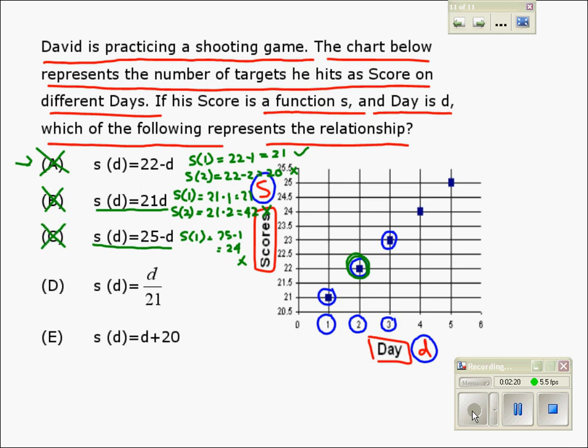Option D says S equals D over 21. So for day 1, S will be 1 over 21, which clearly isn't equal to 21, as shown in the chart. Therefore, option D is not right.